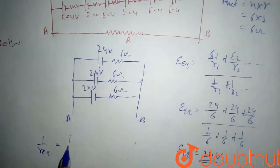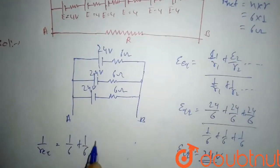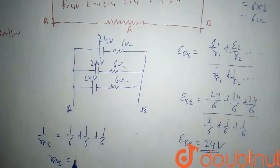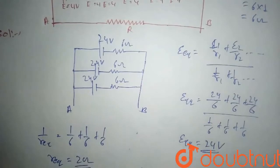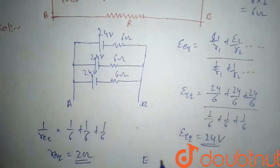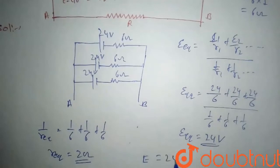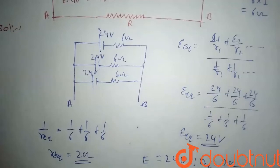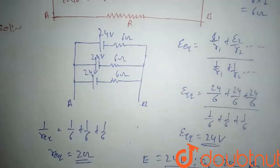The equivalent resistance is given by 1/r_eq = 1/6 + 1/6 + 1/6, so R equivalent comes out to 2 ohm. Therefore the net EMF between A and B is 24 volt and R equivalent is 2 ohm. This is our final answer.